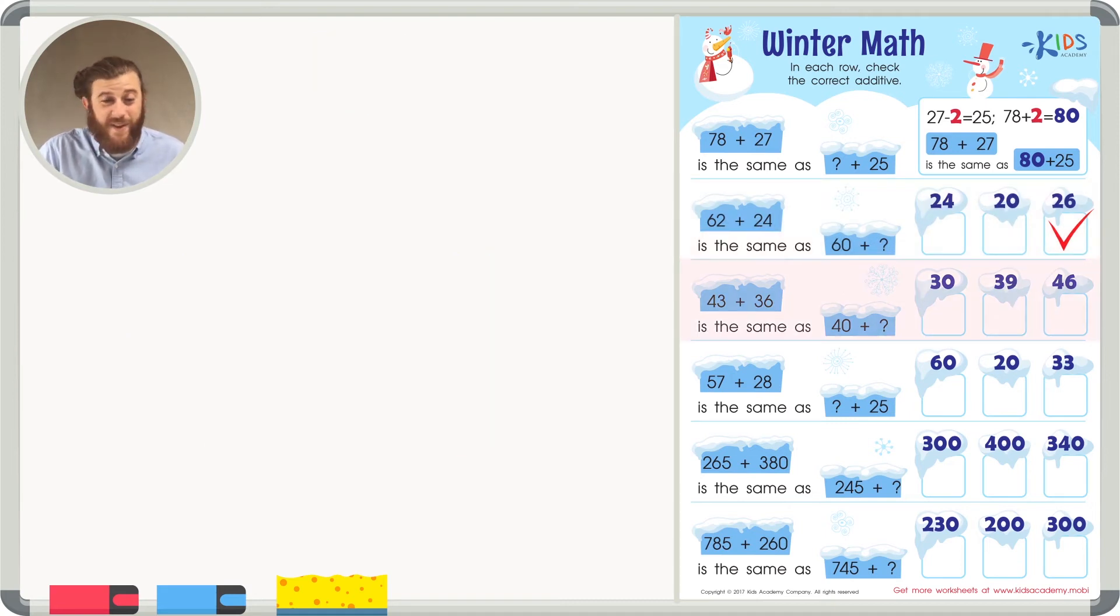The next problem has us adding 43 plus 36. The question wants to know, what's the missing additive in 40 plus blank? So how did we get from 43 to 40? Can you do this in your head? I bet you you can. If you count backwards from 43, 43, 42, 41, 40, you'll see that we took away 3.